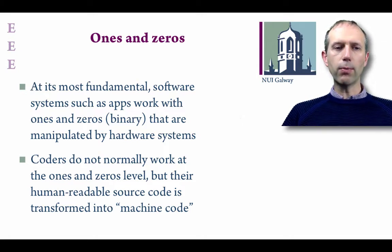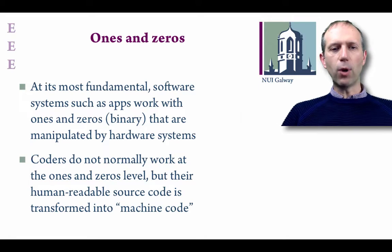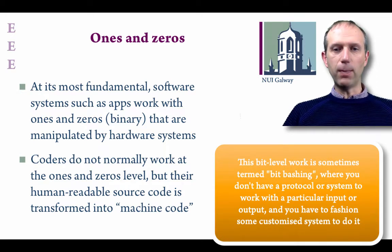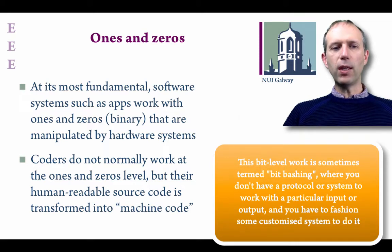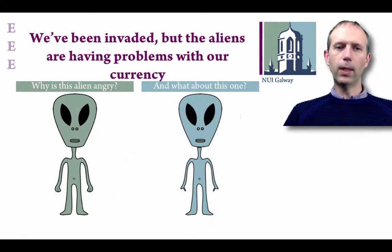Coders used to work at the ones and zeros level — certainly at the machine code level — but they don't normally work at that level unless they have to create very specialized platforms that need to work at the bit level. Usually they create some kind of human-readable source code that then gets transformed into machine code.